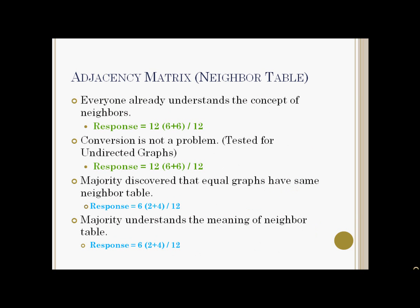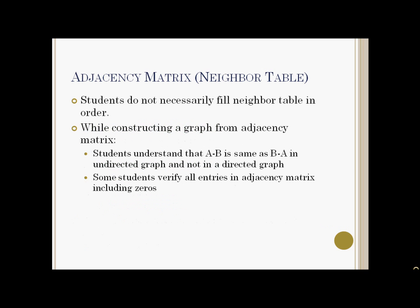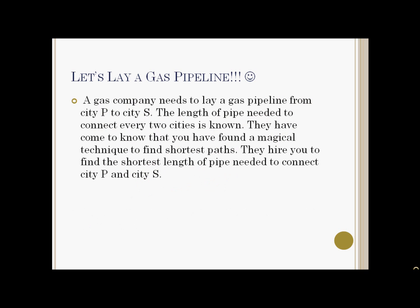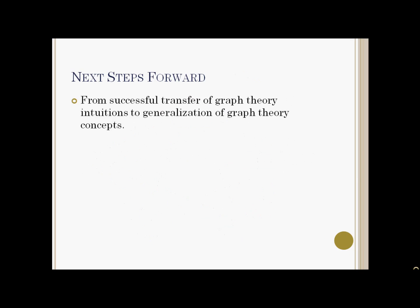Students already understood the concept of adjacency and had no problems going back and forth between graphs and adjacency matrices. It is interesting to note that the students do not necessarily fill the adjacency matrix in order. The students were then presented with the shortest path problem in the form of a story. Given this graph, students were asked to plan a shortest path trip between two cities O and T. Students were walked through an example of finding shortest path through Dijkstra's algorithm in story mode, after which they successfully applied the algorithm on a similar but different problem.